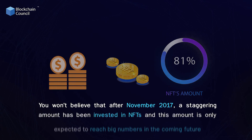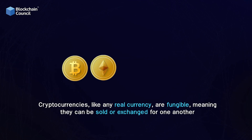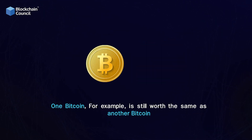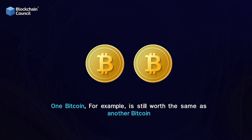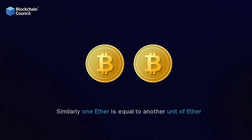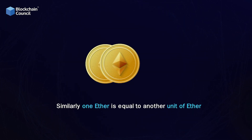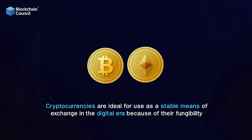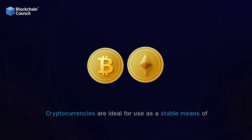Cryptocurrencies, like any real currency, are fungible, meaning they can be sold or exchanged for one another. One bitcoin, for example, is still worth the same as another bitcoin. Similarly, one ether is equal to another unit of ether. Cryptocurrencies are ideal for use as a stable means of exchange in the digital era because of their fungibility.